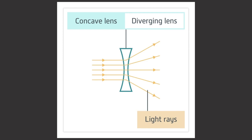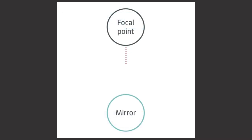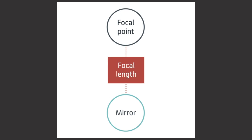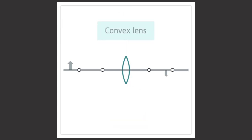The rays appear to come from a point in front of the lens, which is the focal point. The distance between the focal point F and the lens is the focal length. This is a diagram of a convex lens with an object and its image.